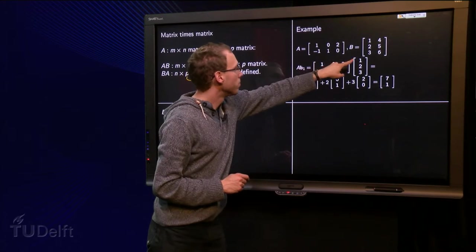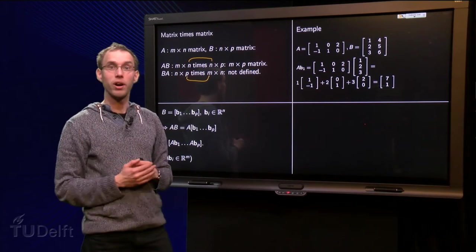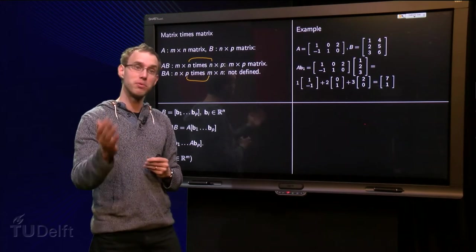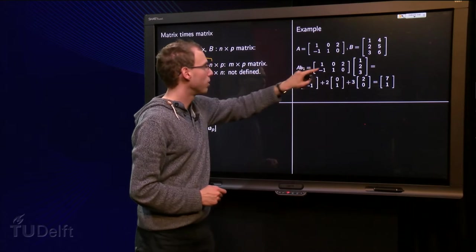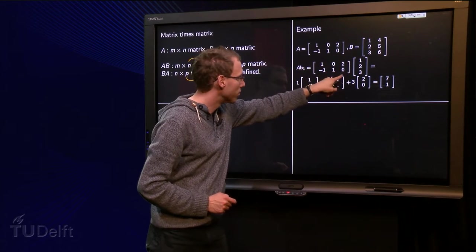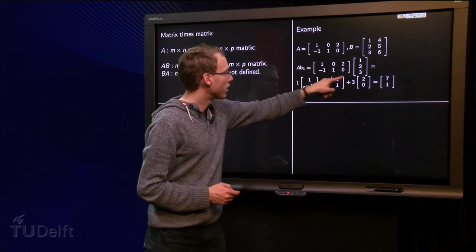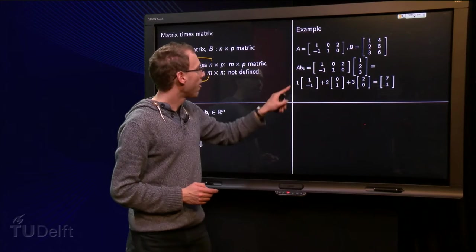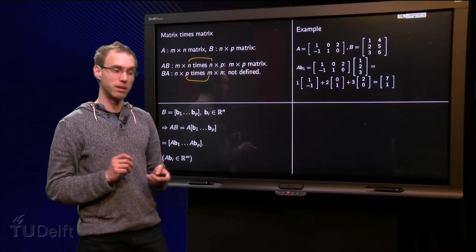A times B1, with B1 equals 1, 2, 3, how do we get that? We know already how to compute matrix times vector. A times B1 yields 1 times the first column of A, plus 2 times the second column of A, plus 3 times the third column of A, and we add all the numbers: 1 plus 0 plus 6 equals 7, and minus 1 plus 1 plus 0 equals 1. So A times B1 equals 7, 1.